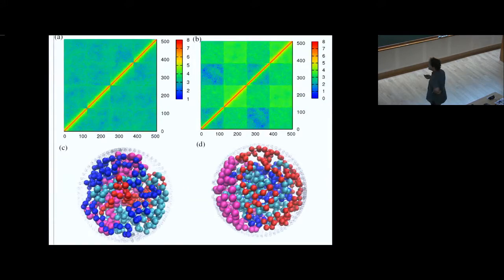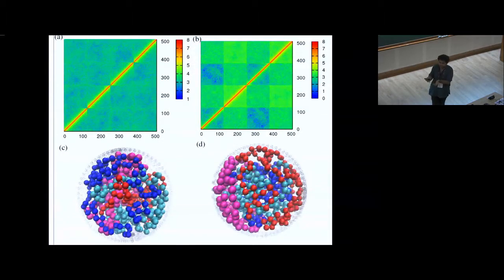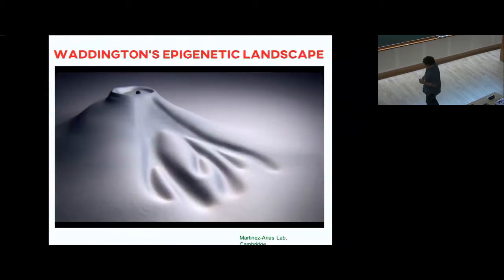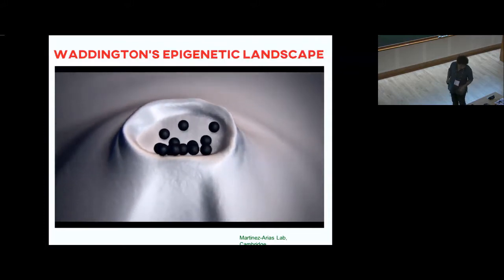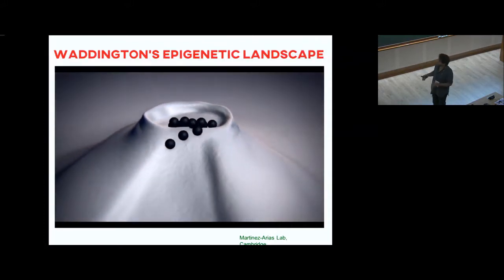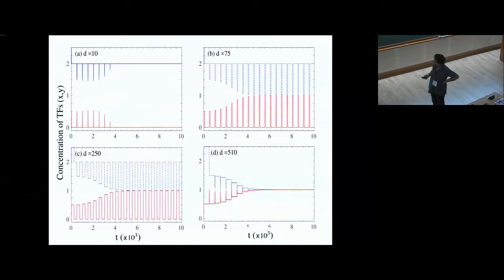Also, these models with simply an attractive surface and spherical confinement give rise to territory formation. If you have multiple polymers in the system, they tend to segregate within their own territories — they tend not to mix with each other. My time has come to an end so I will not talk about epigenetic landscapes — how a cell divides into differentiated cell fates and how we can model them. There is a poster on this by Bibhash who's in the audience.